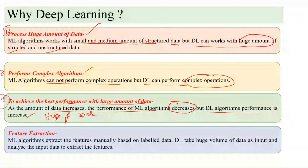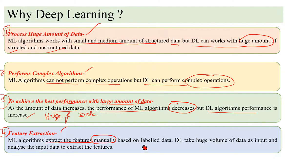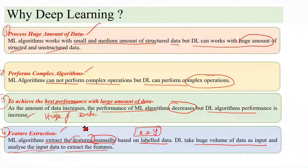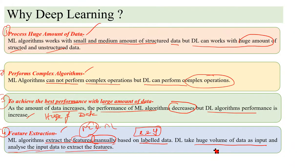Fourth, feature extraction: machine learning algorithms extract features manually based on labeled data (input variables and output variables). Deep learning takes a huge volume of data as input and analyzes it to extract features automatically. This is the main difference between machine learning and deep learning — in machine learning, features are extracted manually, but in deep learning, features are extracted by the system itself.